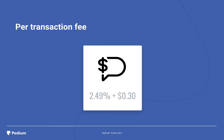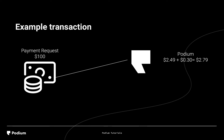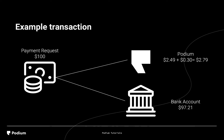We are PCI compliant and help protect you against fraud. For every transaction that takes place in Podium, you'll be charged 2.49% of the amount requested, plus an additional flat rate of $0.30 per transaction. So if you send a payment request of $100 to a customer, you'll pay $2.49 plus $0.30 in transaction fees — that's $97.21 credited to your bank account.